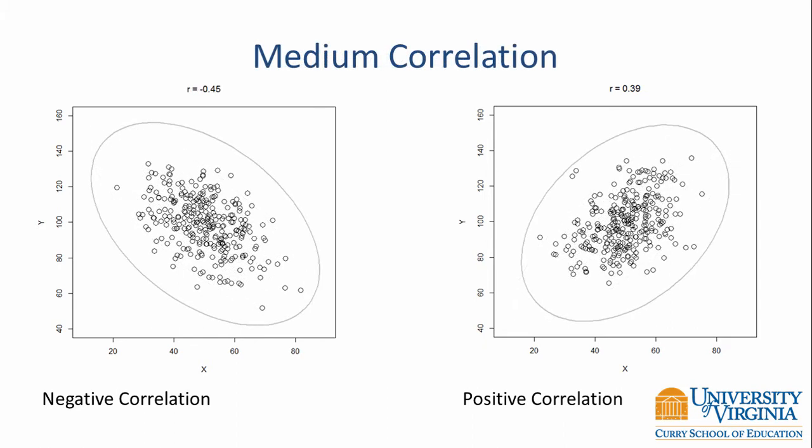Here we have two medium correlations. On the left, a correlation of negative 0.45 shows the pattern of points is still clear but spread out considerably, and the ellipse is beginning to look more like a circle. On the right, a correlation of positive 0.39 shows points tending to get wider, but there is still a clear positive trend sloping upward from left to right.